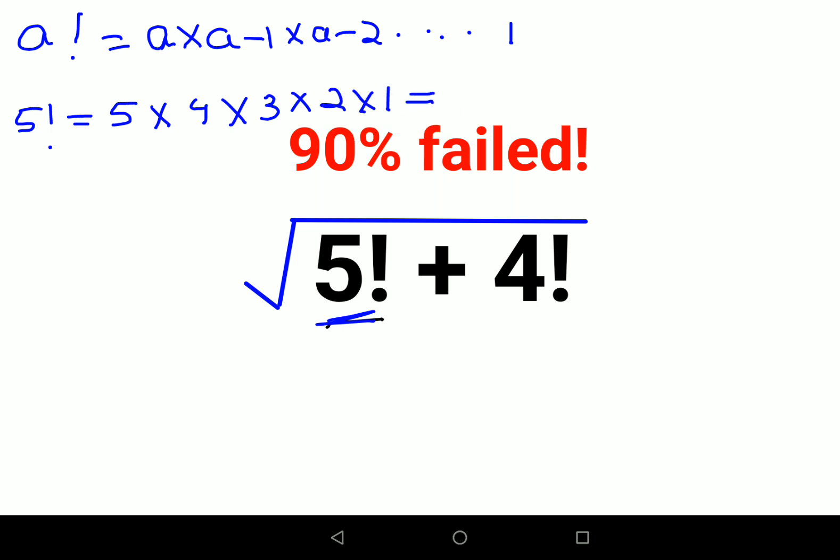So when you multiply this you have 5 into 4 which is 20, into 3 that gets you 60, into 2 that gets you 120, into 1 that also gets you 120.